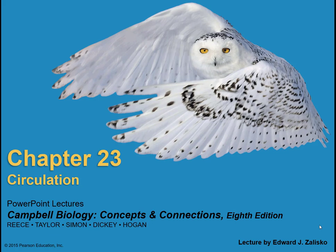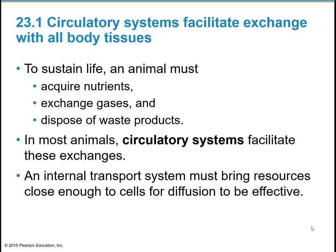Chapter 23: Circulation. In order to maintain life, an animal has to acquire nutrients, exchange gases — specifically CO2 and oxygen — and also dispose of waste products. In most animals, the circulatory system will facilitate all three of those exchanges.